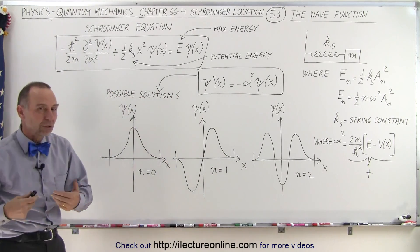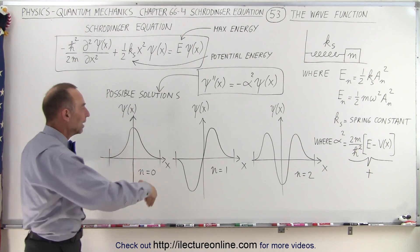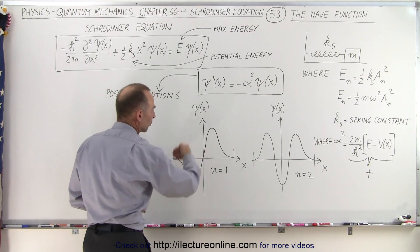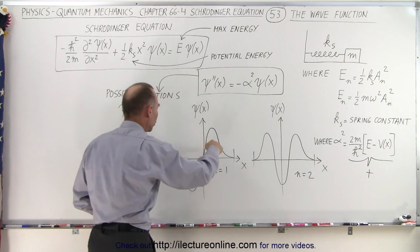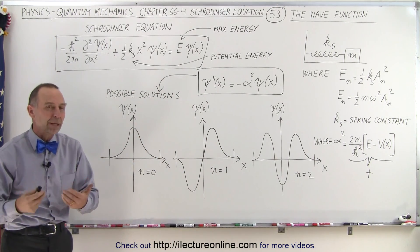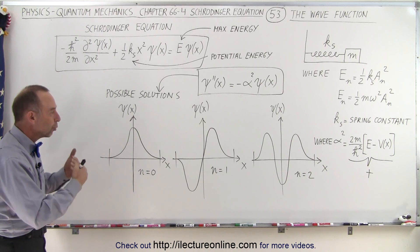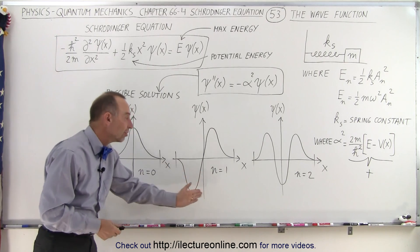And so when you calculate the probability of the wave function, you square the wave function, and then everything becomes positive. So this slope down here becomes positive. This slope right here becomes positive. So you have three lobes here, two lobes here, one lobe here on the function representing the probability density function. So the wave function really has only one way in which you can draw it for the various energy states.